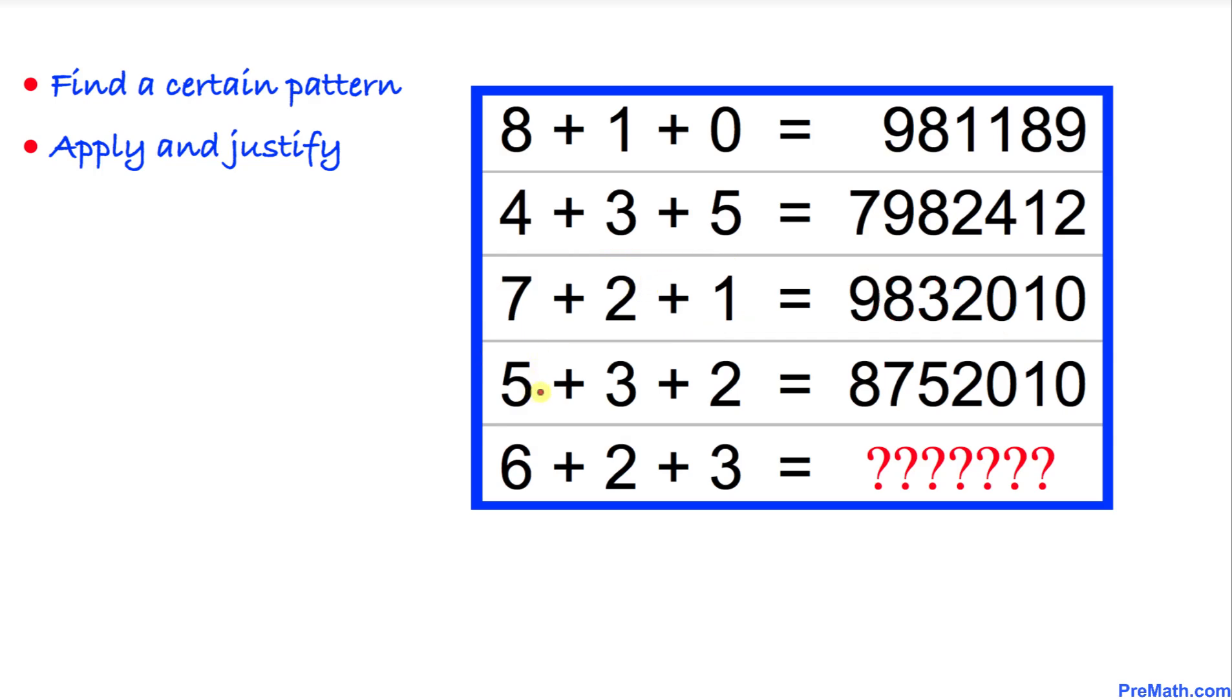And now let's move on to the fourth row. Five plus three is eight, five plus two is seven, and two plus three is five.